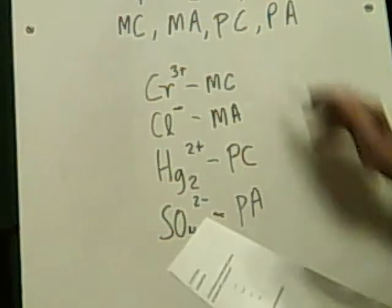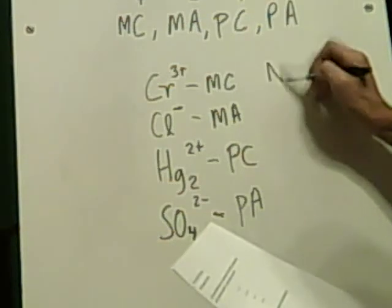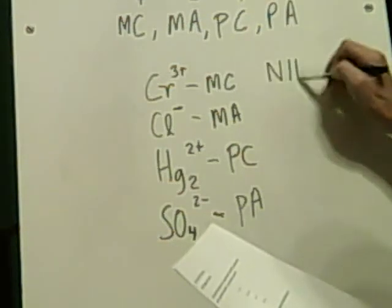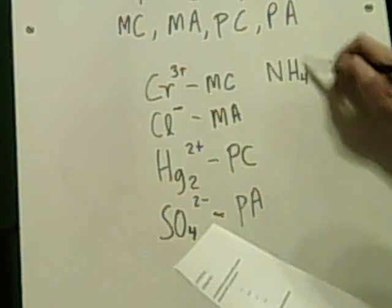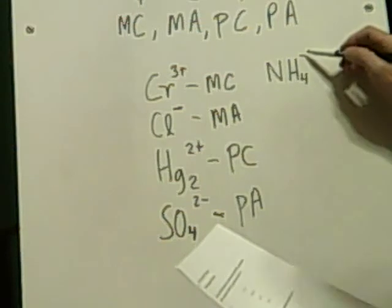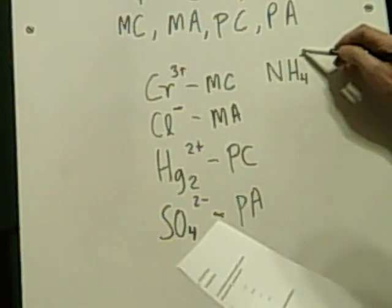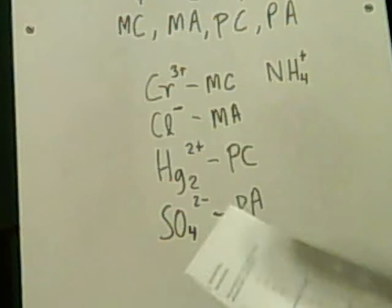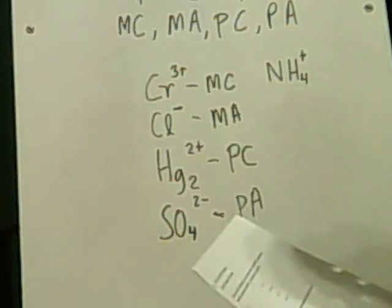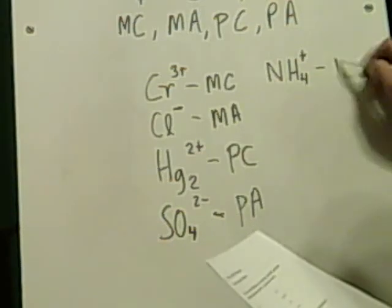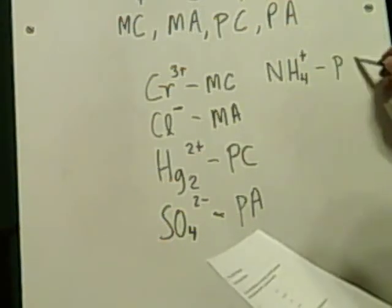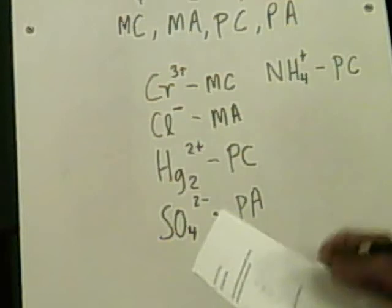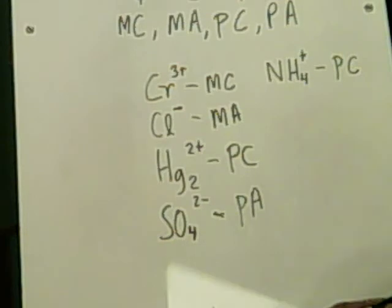Let's go to number 5: NH4 plus. This is an ammonium ion, and this is obviously polyatomic, and it's a cation because it ends up being positive.